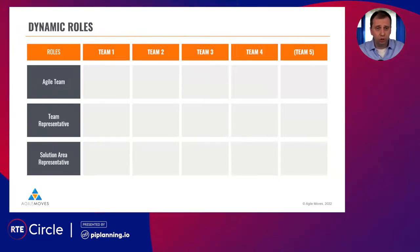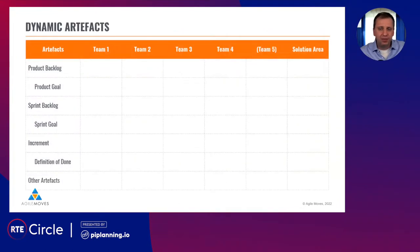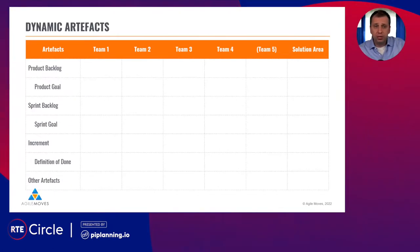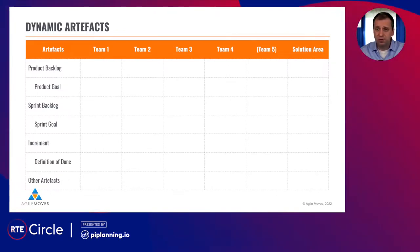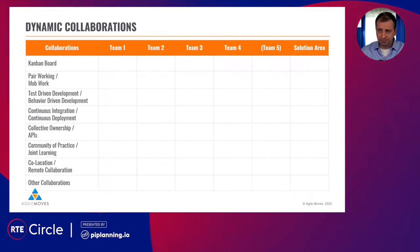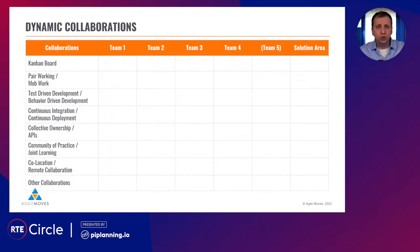We also use matrices for artifacts: do we need a backlog for each individual team within a solution area, or a backlog for the whole solution area, or both? Do we need a definition of done for the whole solution area, or does each team have its own, or a mixture of both? And for collaborations: do we have a shared Kanban board or does each team have its own? How do we deal with pair work or mob working? You can synchronize a lot within a solution area if you want to.